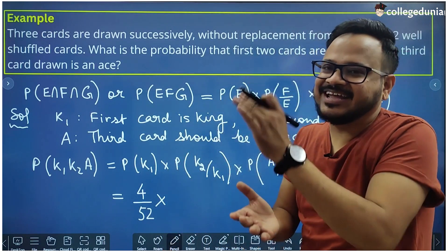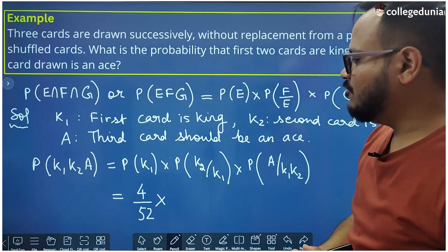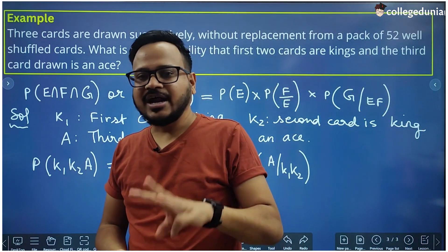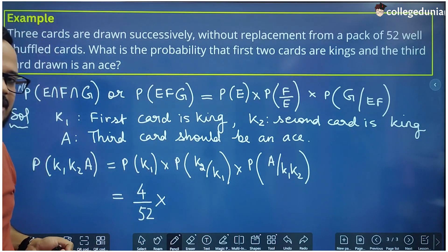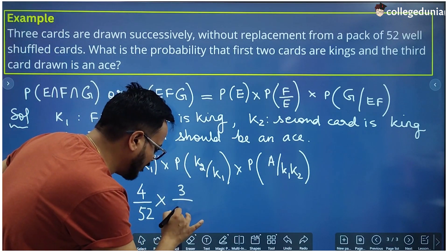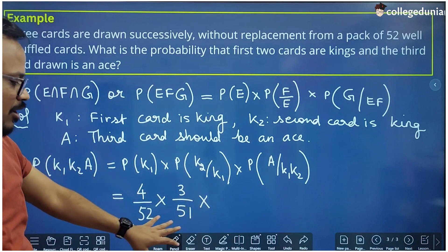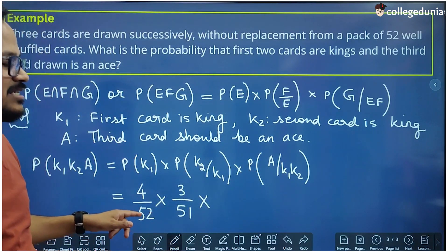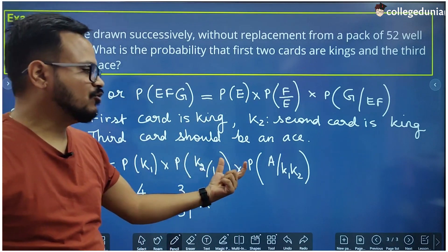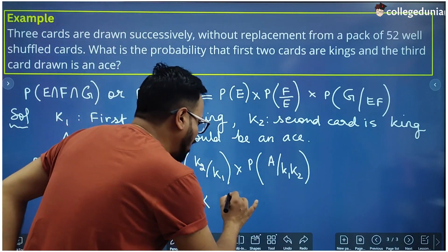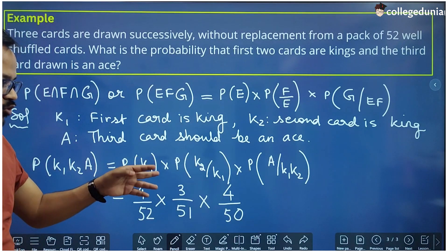For P(K2|K1): one king has already been drawn, so 3 kings remain and 51 cards remain in total, giving P(K2|K1) = 3/51. For P(A|K1K2): two kings have been drawn, so 50 cards remain. All 4 aces are still in the deck, giving P(A|K1K2) = 4/50.